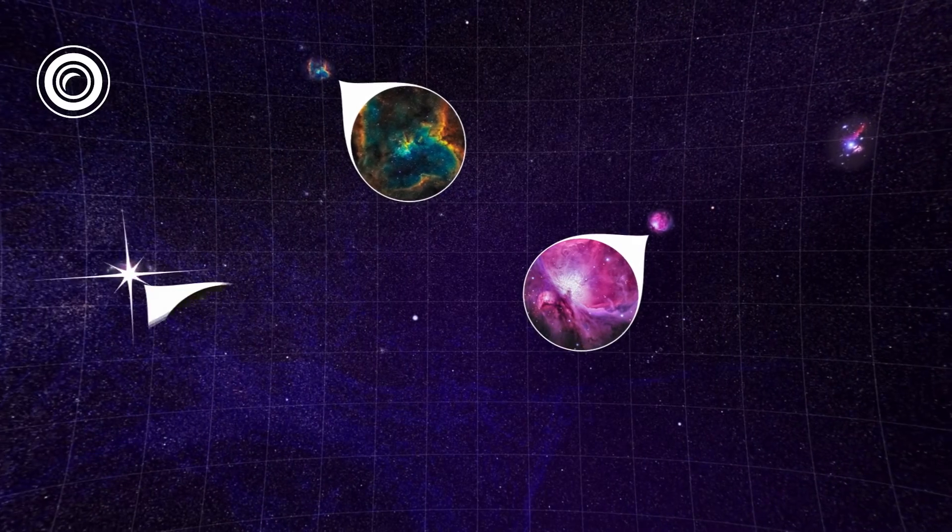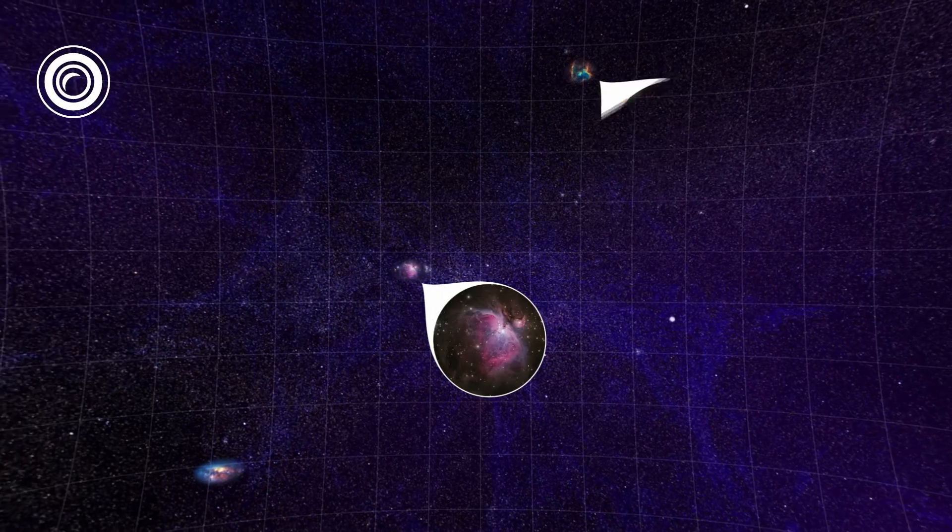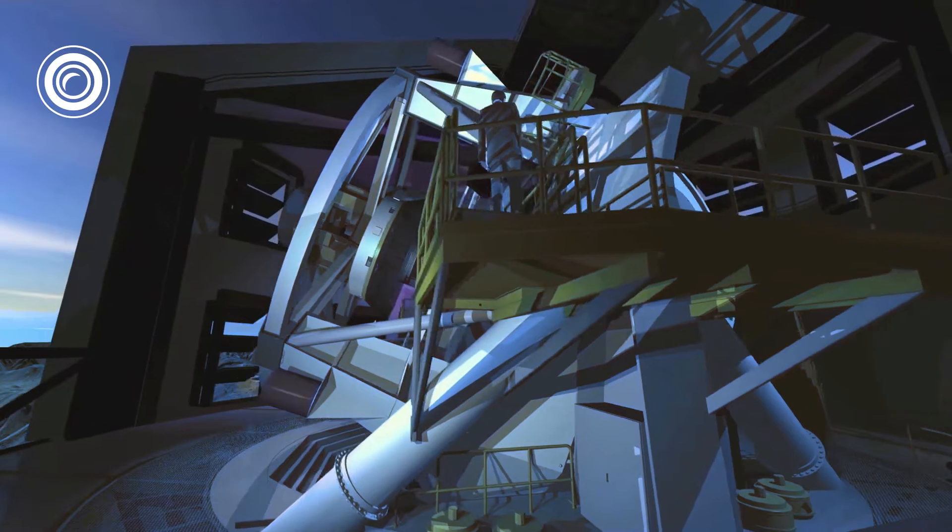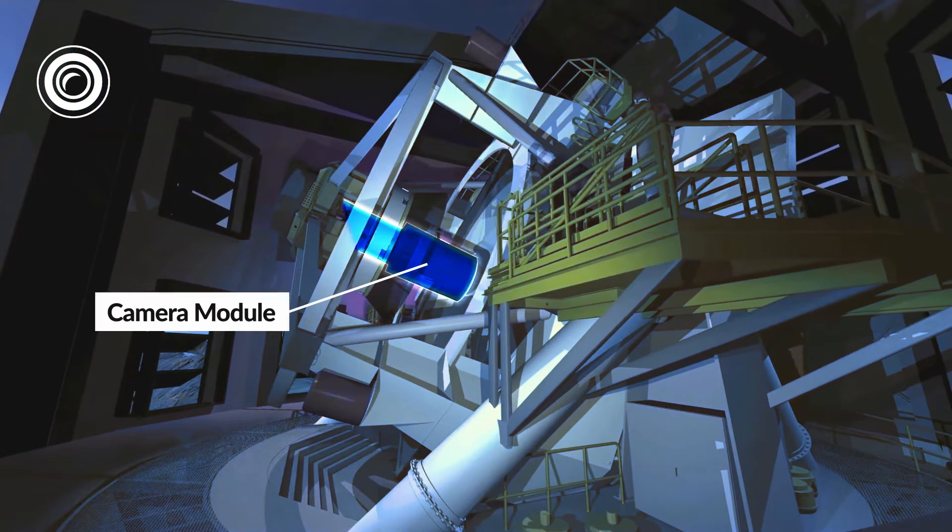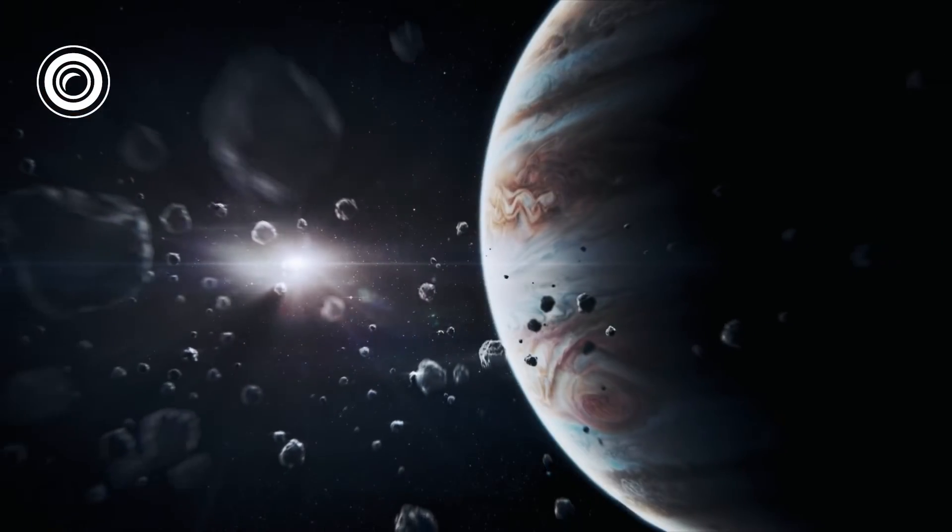These observations will help researchers understand the nature of dark matter and dark energy. But that's not all. The telescope and its camera will help astronomers map out a lot of transient phenomena, like exploding stars and asteroids, whose positions change from night to night.